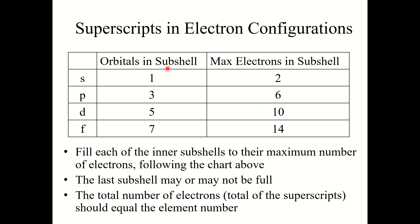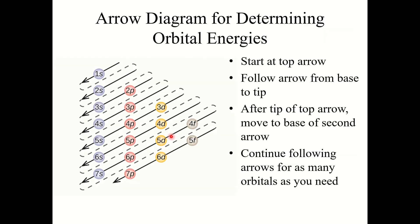Think about the maximum electrons each subshell can hold. There is a single s orbital per subshell, so the max electrons in an s subshell is 2. There are three p orbitals, so up to 6 electrons fit in each p subshell. Five d orbitals means 10 electrons per d subshell, and seven f orbitals means 14 electrons per f subshell. Fill each inner subshell to its maximum before moving on; the last subshell may or may not be full.